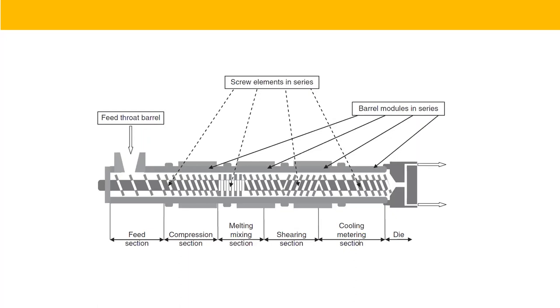Regarding the flights, we learned that the conveying section requires single flights. When we move the material to the melting or metering section, then double or triple flights are required. So we are going to take our screw design in this way.